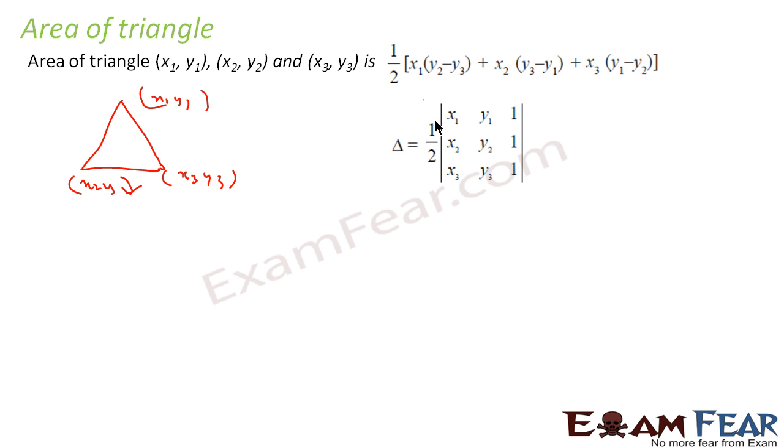Area of triangle is nothing but 1 by 2 into x1, y1, 1, x2, y2, 1, x3, y3, 1 because this is defined only for square matrix. So we have to make it 3 by 3 and that's why we put 1, 1, 1 here.